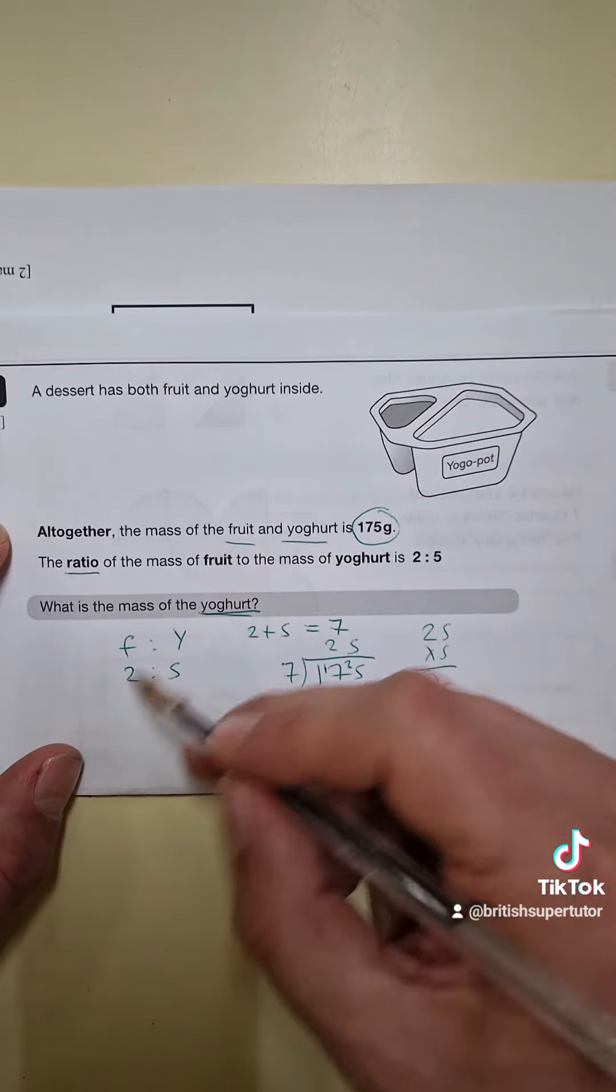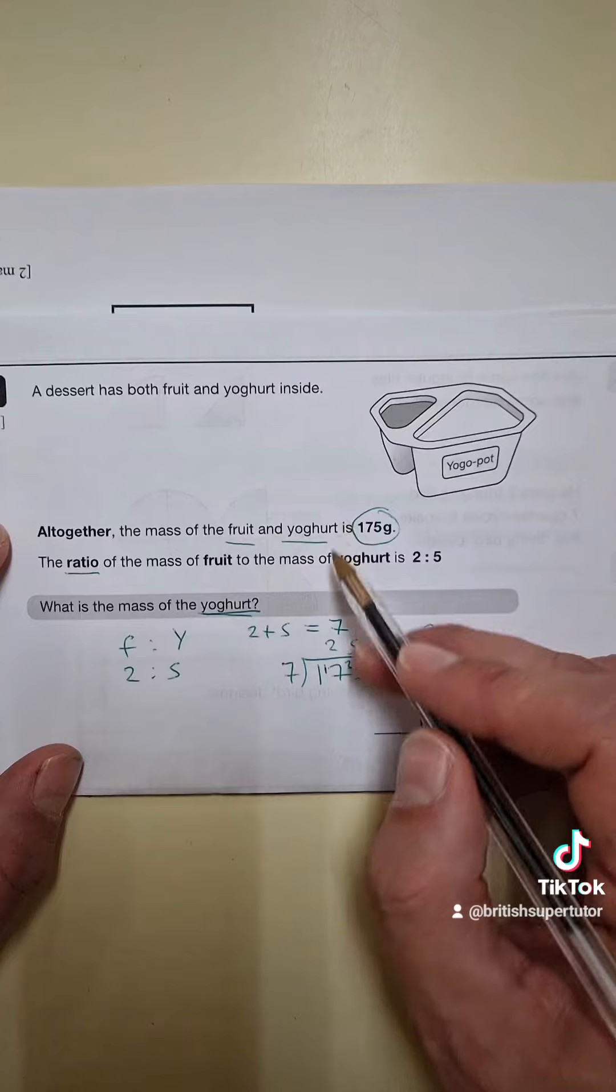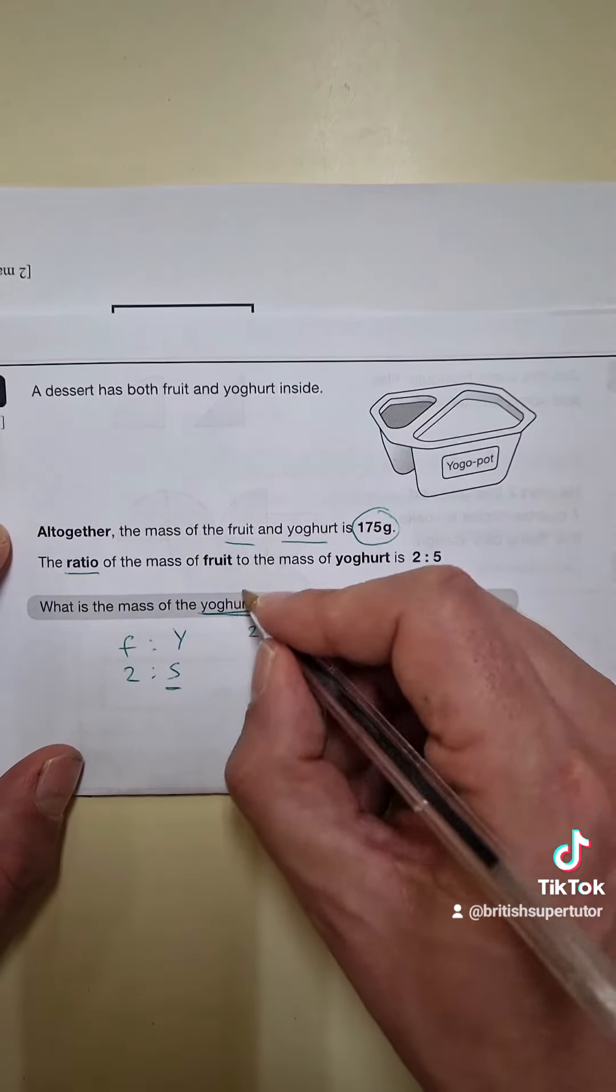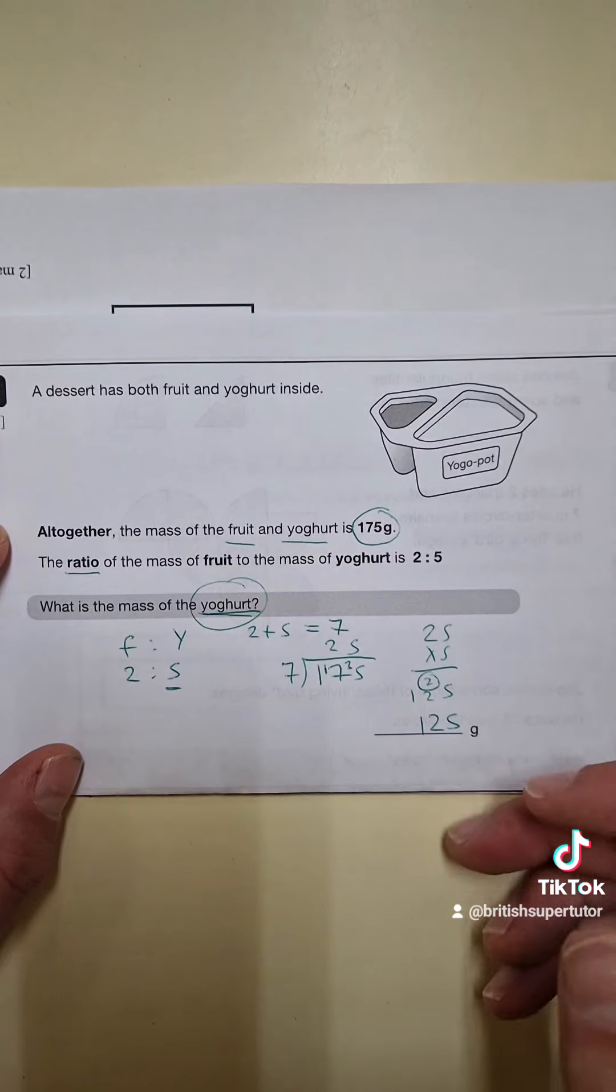Okay, first you add together the numbers and the ratio, then you divide the amount by that, and then you multiply it by the specific ratio we wanted, which in this case was yoghurt. Well I hope this helped you learn that. Thank you very much, have a lovely day everybody, and see you soon. Bye bye.